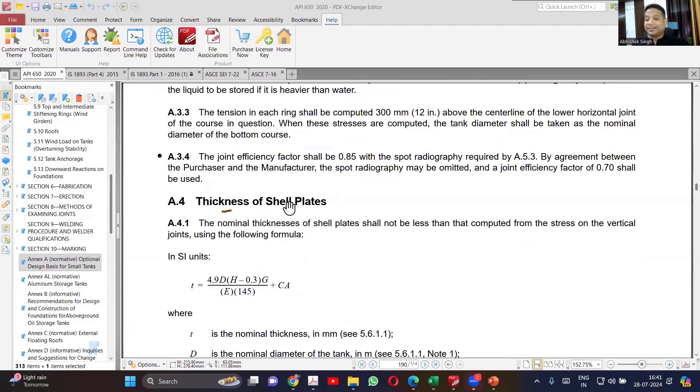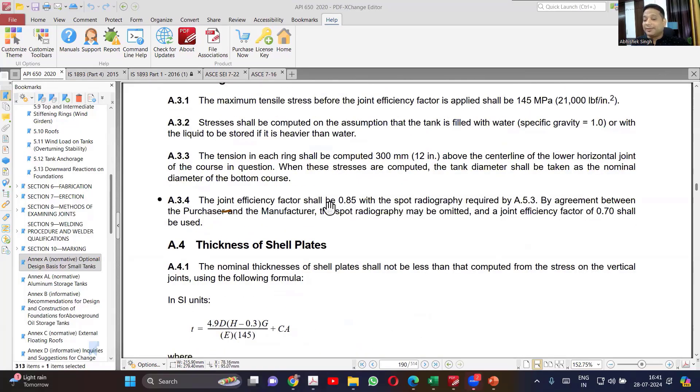There is one more statement, just read this: the joint efficiency factor 0.85 with the spot radiography, but by the agreement between purchaser and manufacturer, even the spot radiography may be omitted, and you can take the joint efficiency factor as 0.7. You can do the calculation.